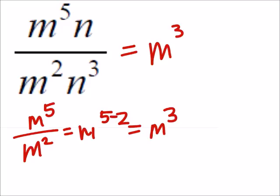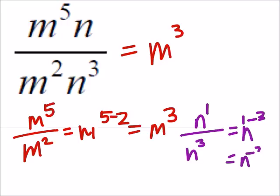Let's look at the n's as well. Well, here I've got n over n cubed, that's n to the power of 1. And so I've got n to the power of 1, 1 minus 3, which is n to the power of negative 2, which is the same as 1 over n squared.